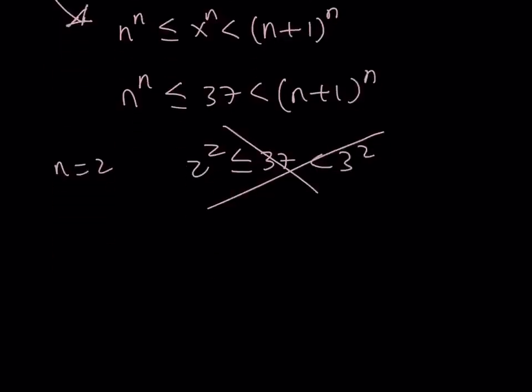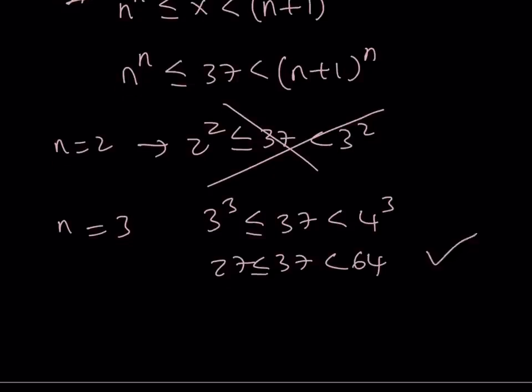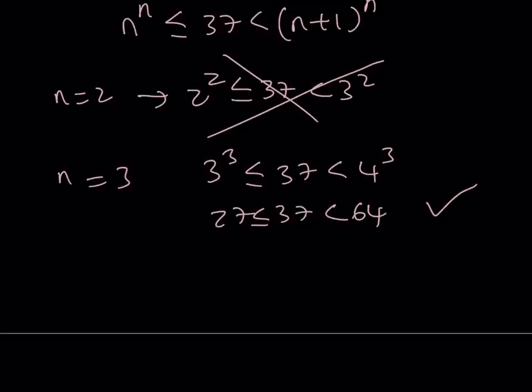Well, if n is equal to 3, actually it is going to work. If n is equal to 3, then you're going to get 3 to the 3rd and 37 and 4 to the 3rd. And, obviously, 37 is between 27 and 64 as we discussed before. Therefore, n equals 3 is going to give us a solution. The reason why it doesn't give us solutions for larger n is because n to the power n is going to grow real fast and 37 is just going to be kicked out of that interval and we have no longer solutions.